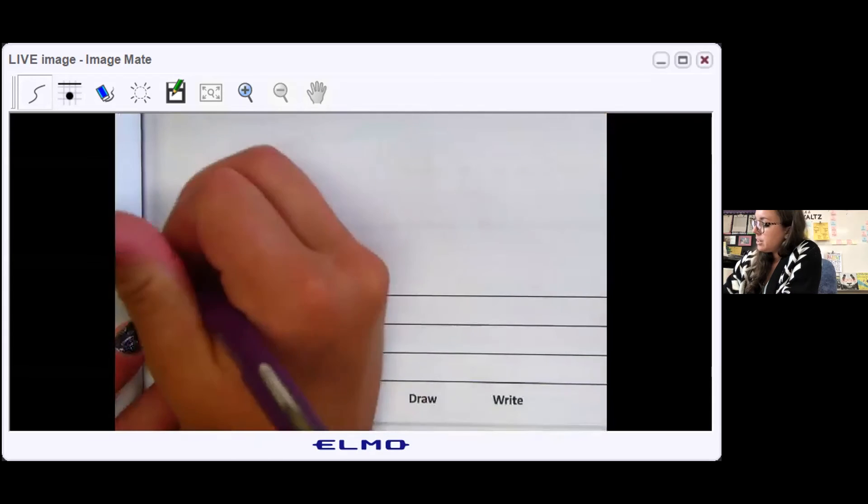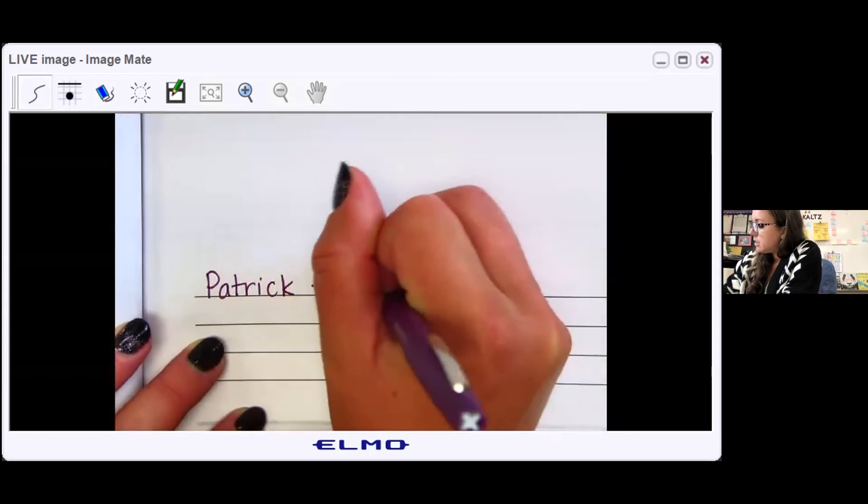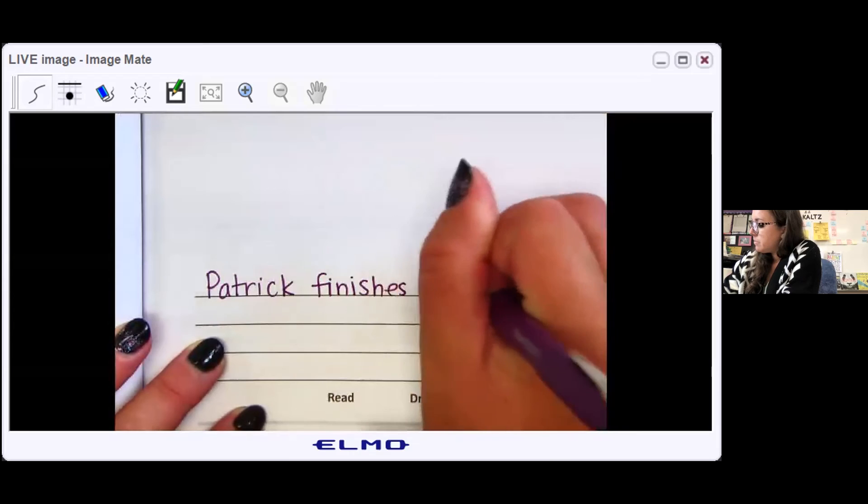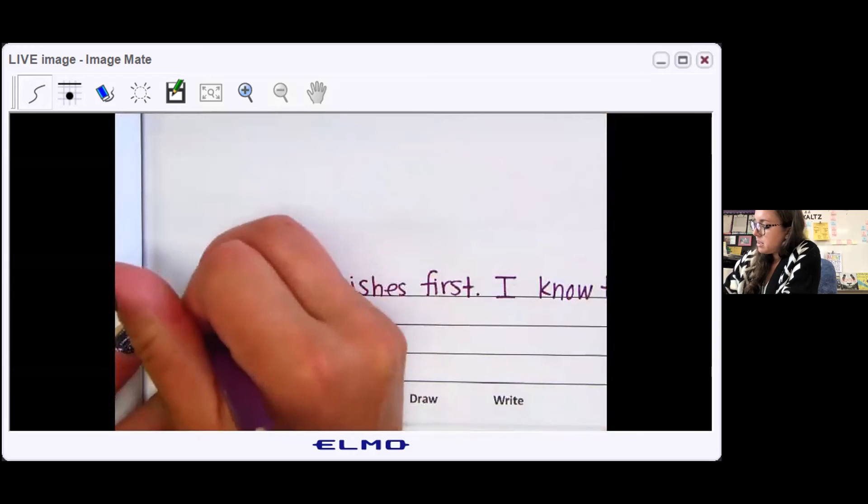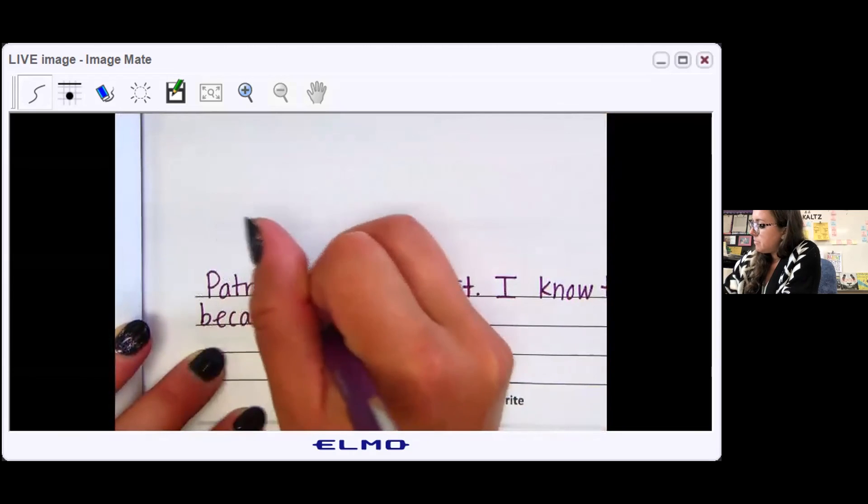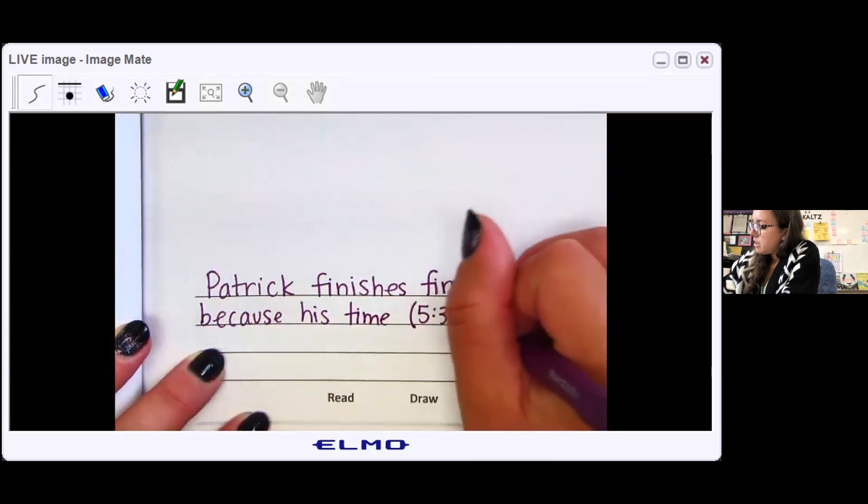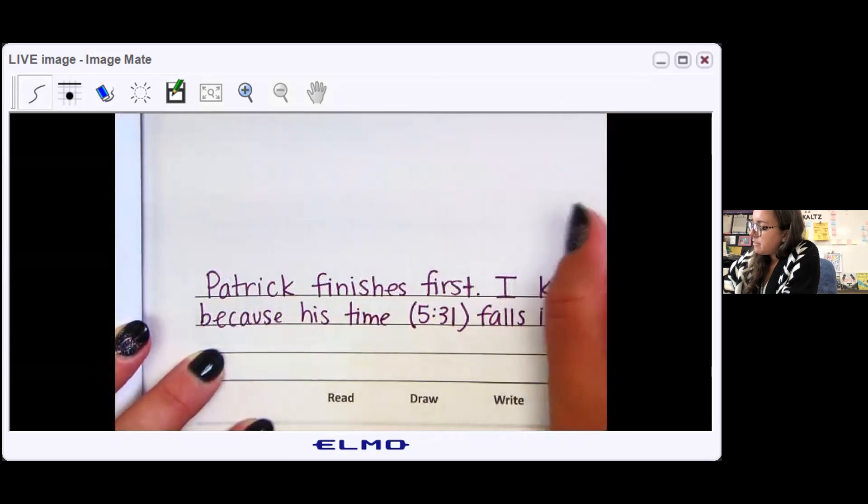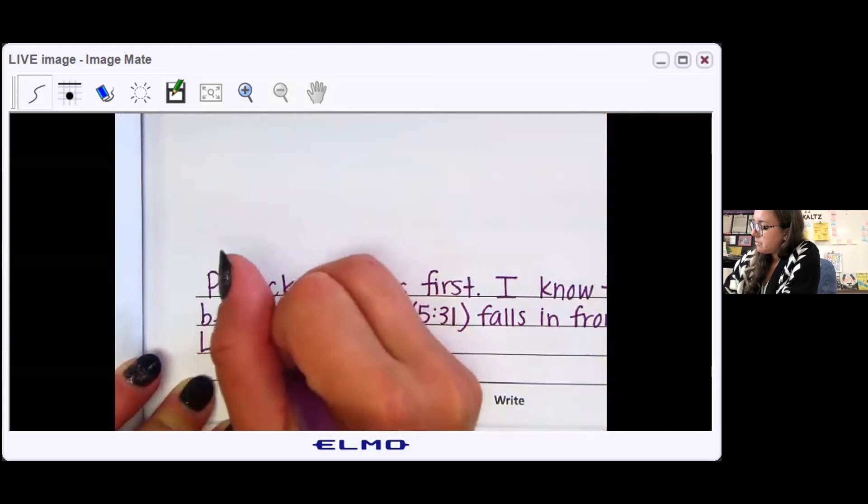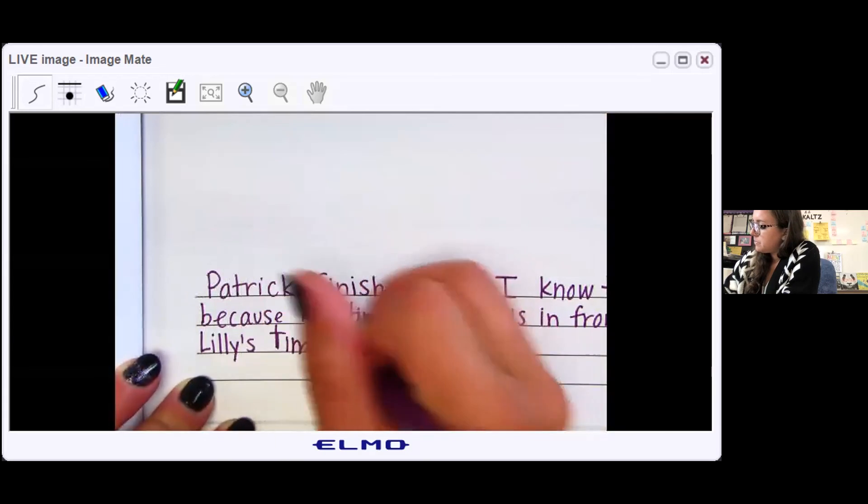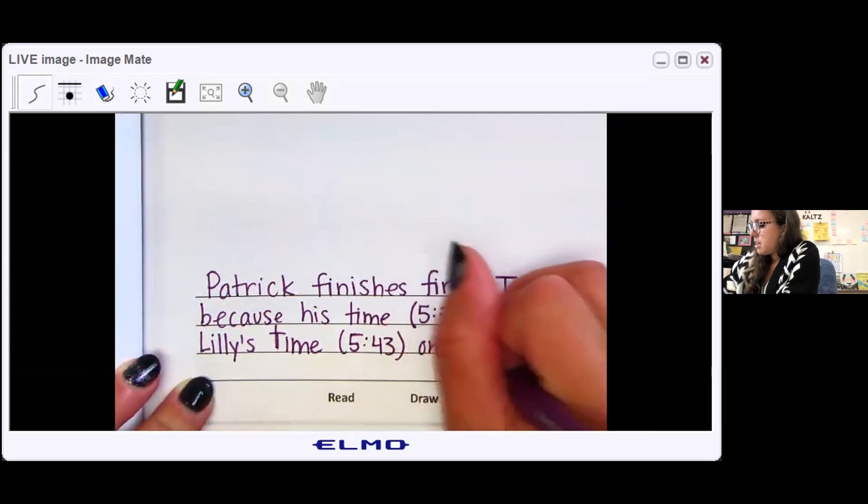So I'm gonna answer who finishes first. Patrick finishes first. I know this because his time, and I'm gonna put parentheses to write what his time was, 5:31, falls in front of Lily's time, 5:43, on the number line.